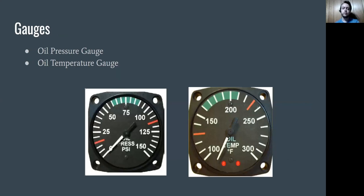There are normally two different types of gauges, sometimes combined into one. The oil pressure gauge measures the pressure of the oil system — a lower or higher oil pressure could indicate issues with engine operation. The oil temperature gauge provides a good indication of what temperature the engine is running at, because oil is the main coolant of the engine.